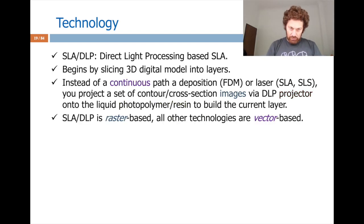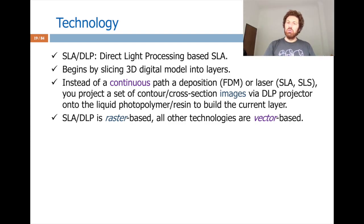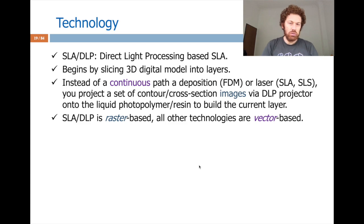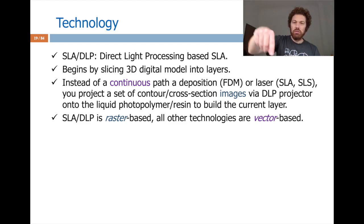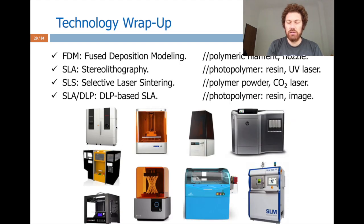This introduces raster-based versus vector-based technology. If there is a continuous path — either extruding material through FDM or sending laser beams through SLA or SLS — a head is continuously moving around; this is called vector-based technology. DLP-based SLA projects an image, so it is called raster-based technology.